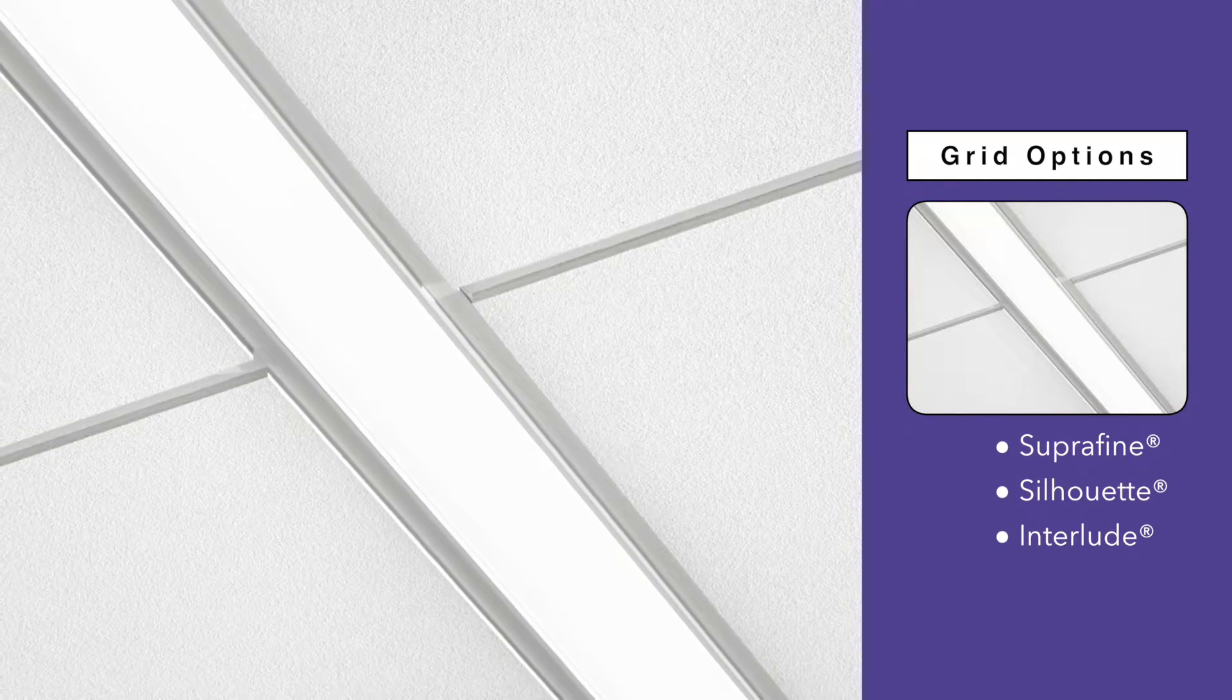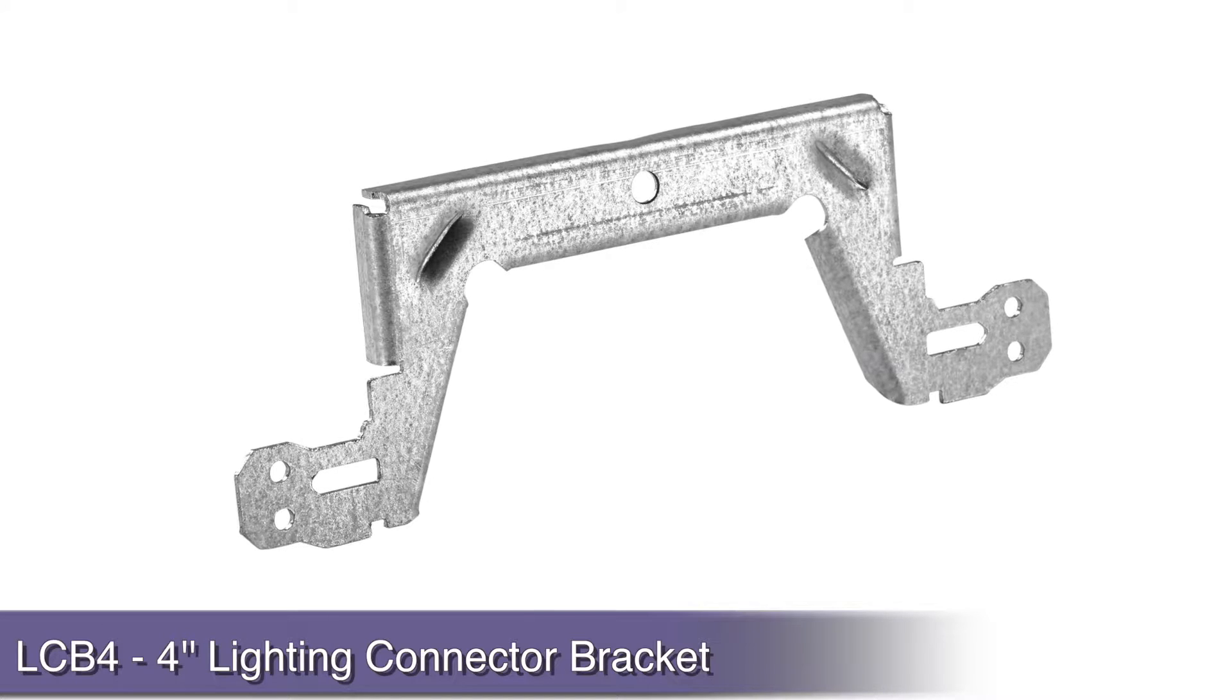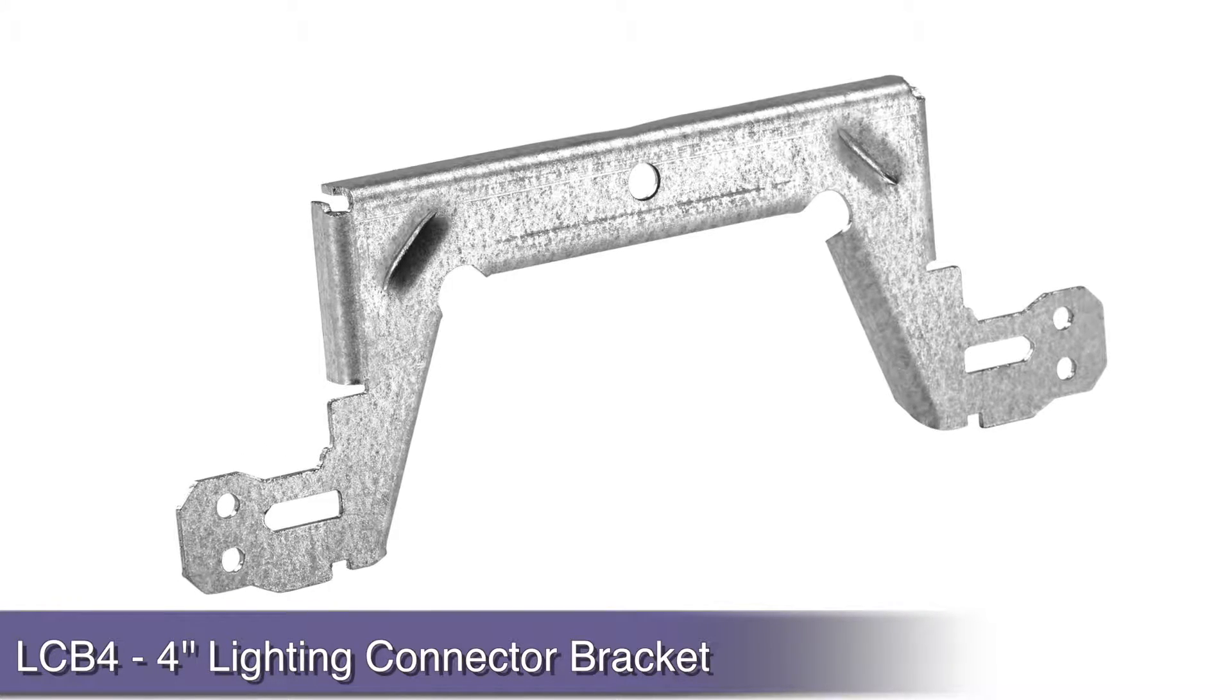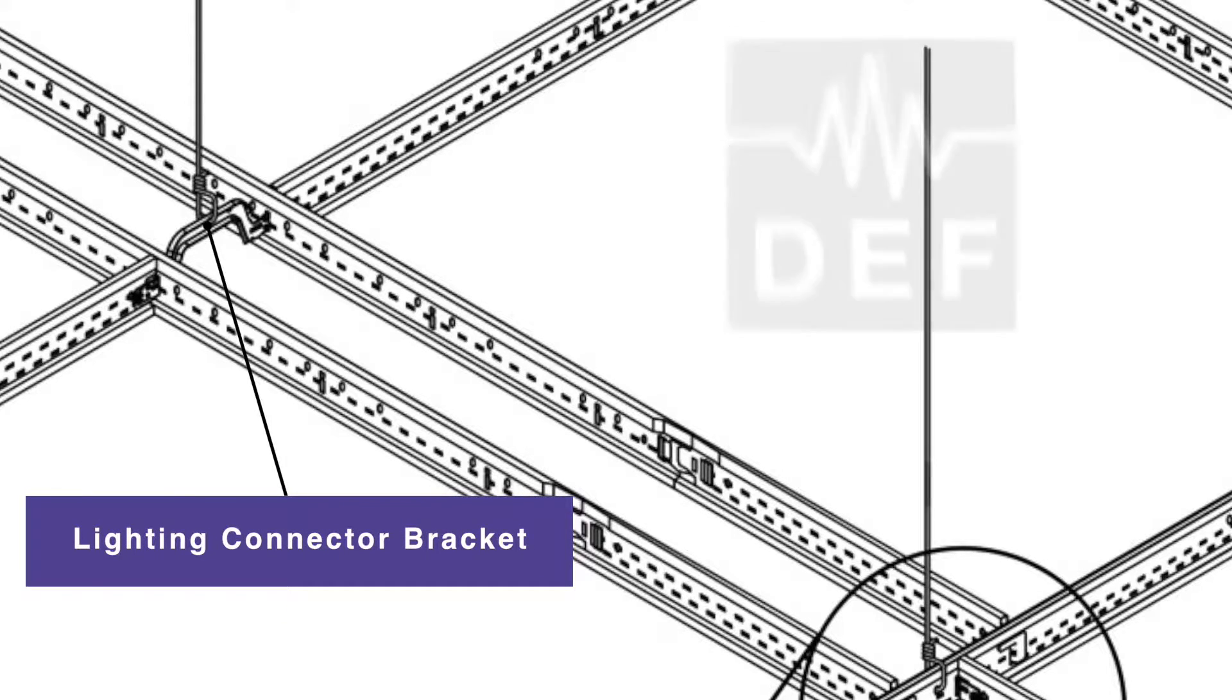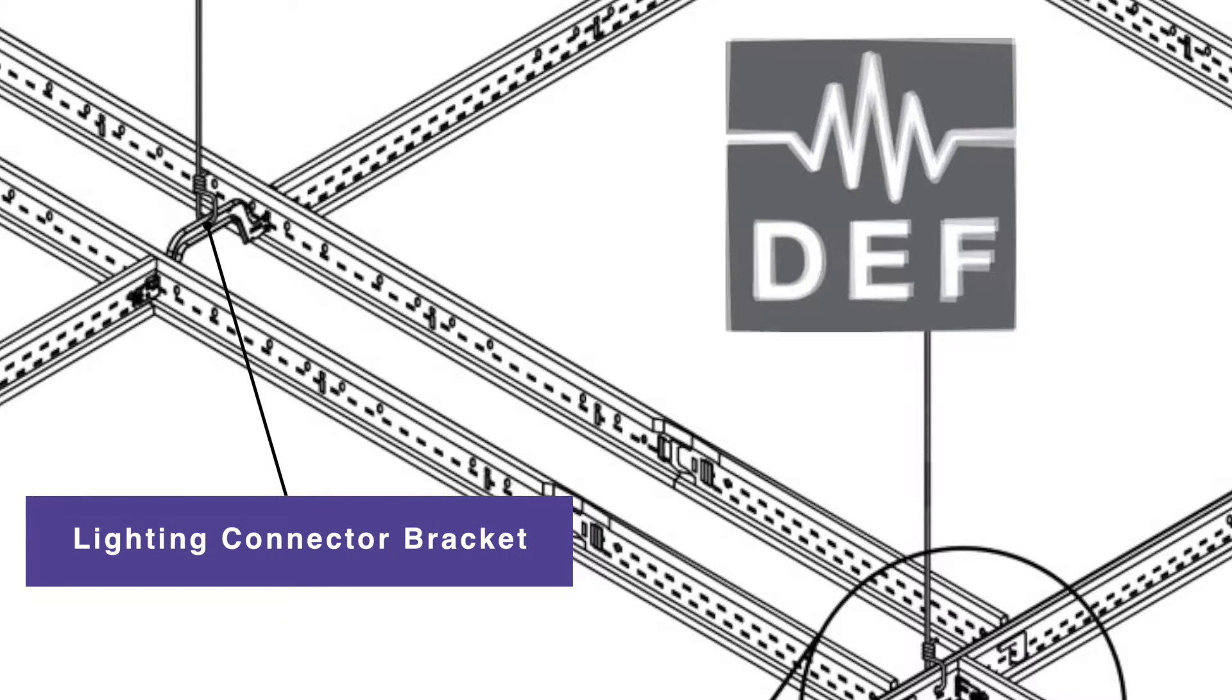Your ceiling grid options include superfine, silhouette, and interlude. Main runners are held parallel even on continuous runs via the 4-inch lighting connector bracket for zero-plenum LED light fixtures. This installation is even approved for seismic DEF installations.